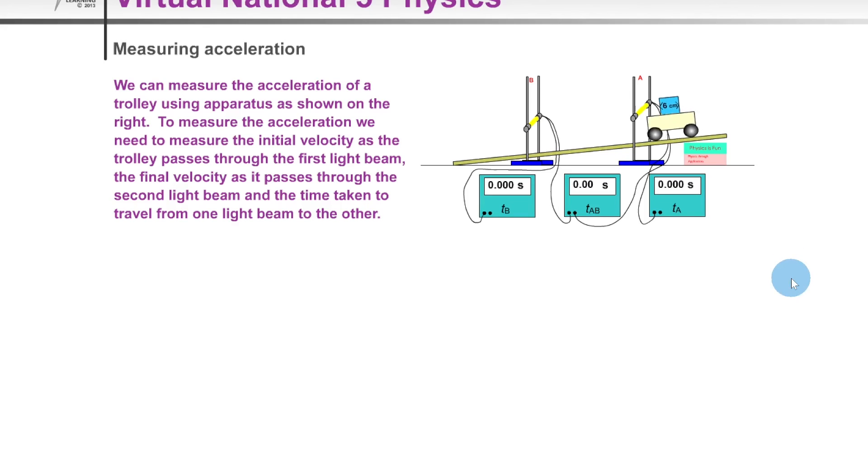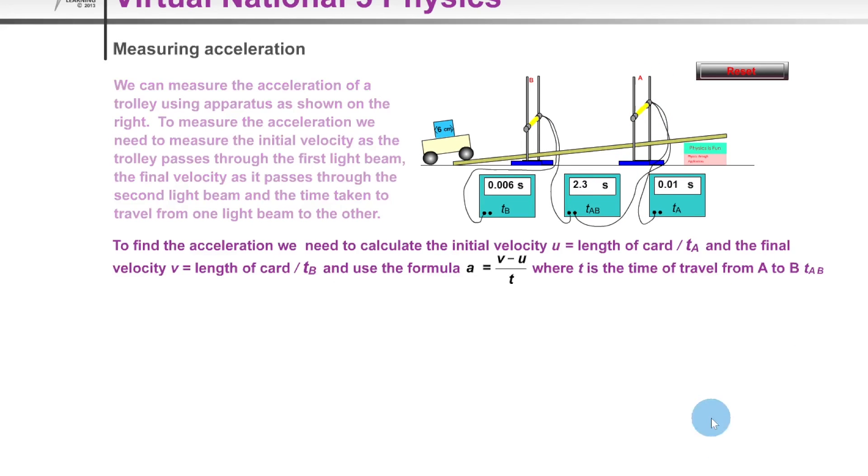So here we've got 0.01 seconds for timer A, 0.006 seconds for timer B, and then 2.3 seconds, the longer time for the card to travel from A to B. So then using these times we could calculate the initial velocity u using timer A, we could calculate final velocity v using timer B.